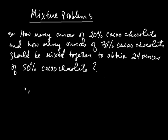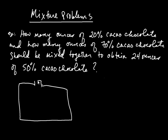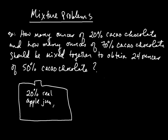Before we begin, let's think of another situation to get the ball rolling. Let's say you had some juice — I'm going to draw a bottle of juice here. It says on the bottle that it's 20% real apple juice. You look at the volume, and let's say you have 500 milliliters. This is the overall volume of liquid inside the container.